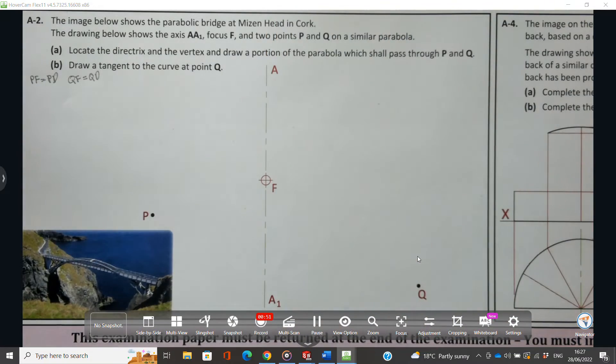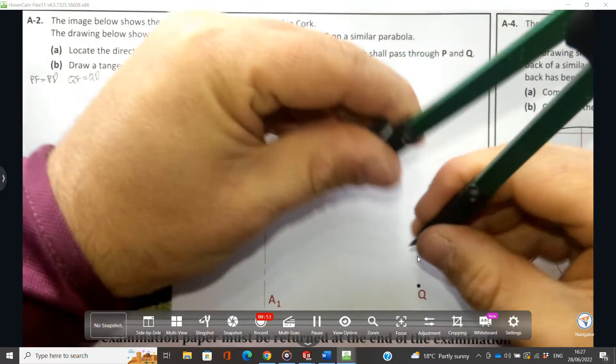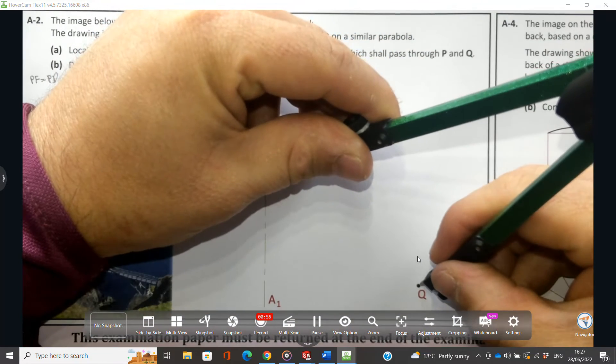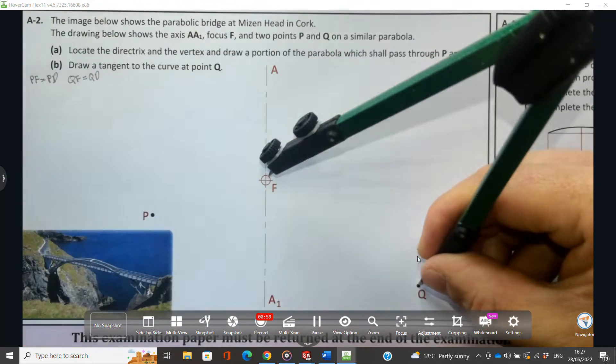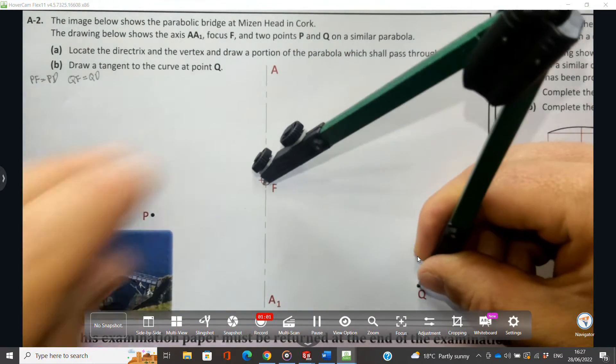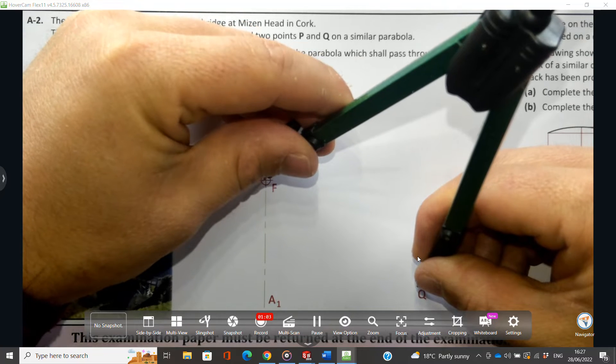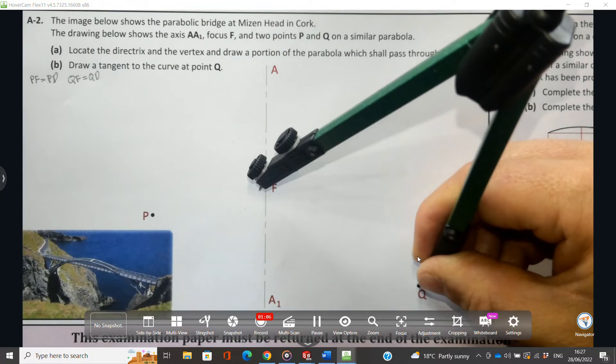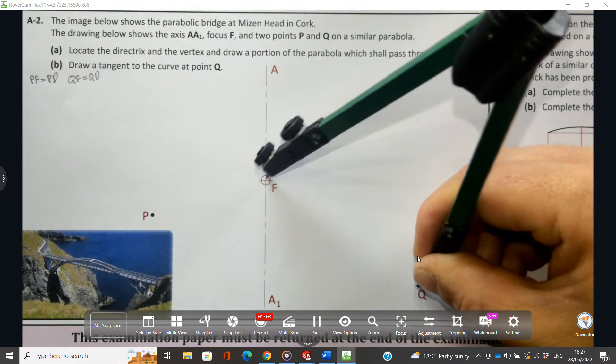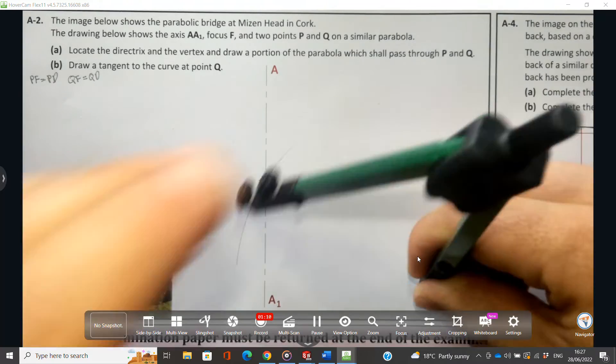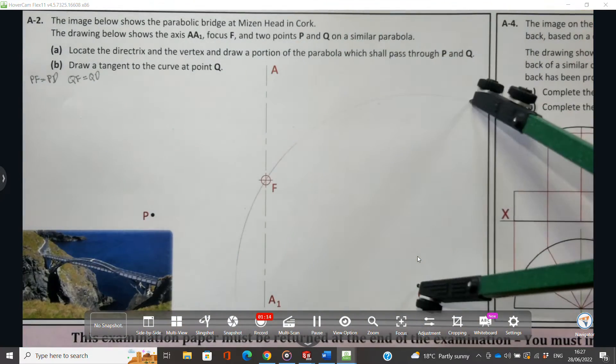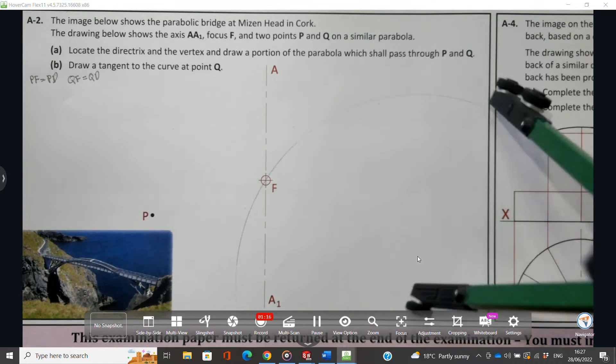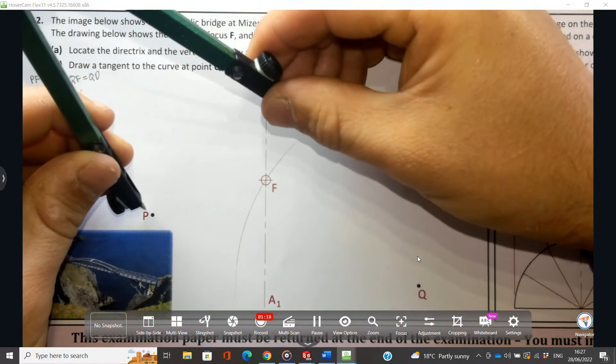What I would do here is get my compass, put it on Q—the point Q is obviously done far too big by the way, and P the point is far too large—but we're going to put our compass on Q, bring it to F, and we're going to draw an arc here. We can do the same then from P.